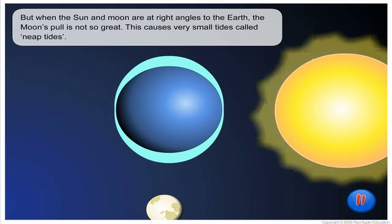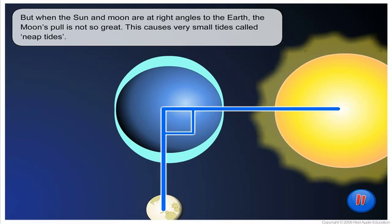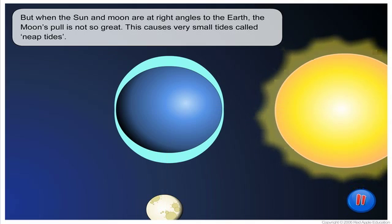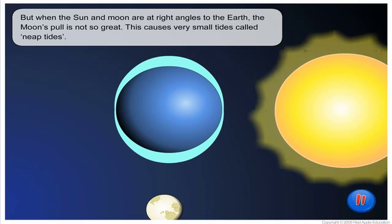But when the Sun and Moon are at right angles to the Earth, the Moon's pull is not so great. This causes very small tides called neap tides.